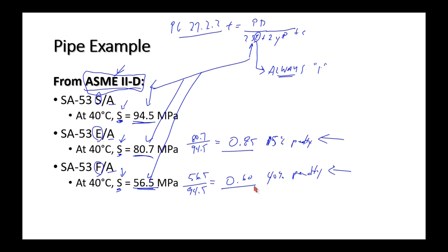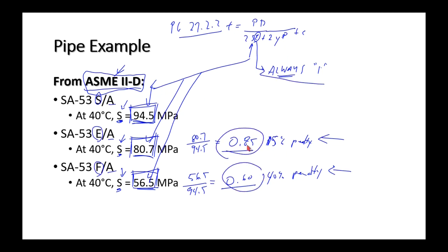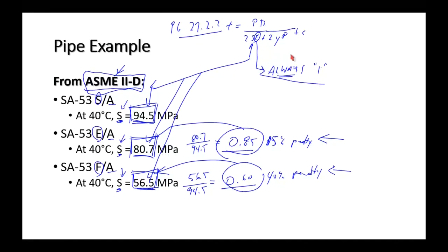ASME 2D builds the joint efficiency penalty into the stress values themselves. Notes in ASME 2D say: forget about using an efficiency factor for your pipe — just use the S value and always use E = 1, and they've taken care of the 0.85 and 0.6 penalties by adjusting the listed stress values for each material. Therefore, for piping calculations, E is always equal to 1.